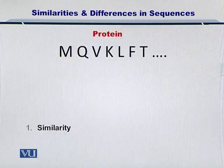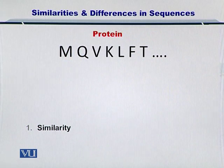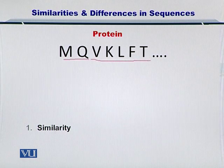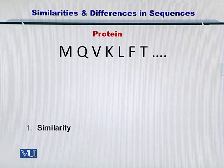So let's start by considering a protein sequence given here. Only a few amino acids are mentioned — typically proteins are very long, but this is just an example. So we have MQVKLFT, that is about seven amino acids, and now we are going to look at what similarity means precisely.